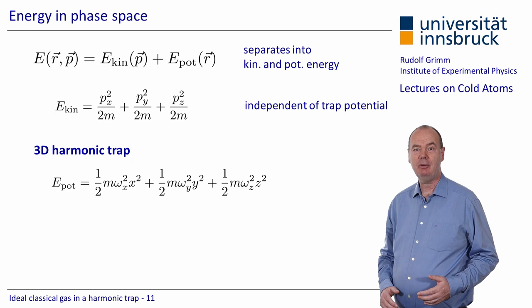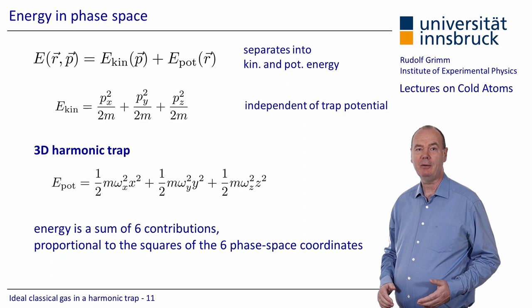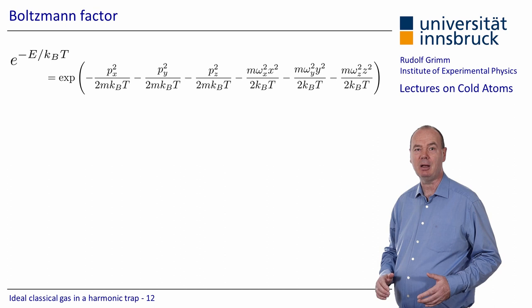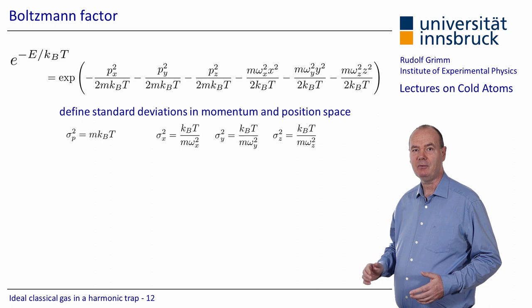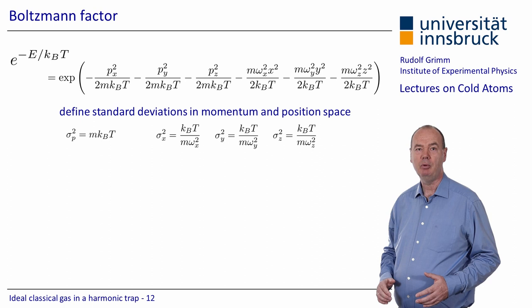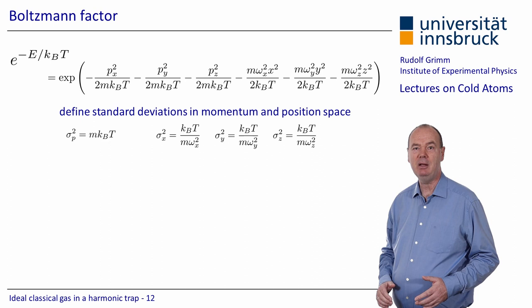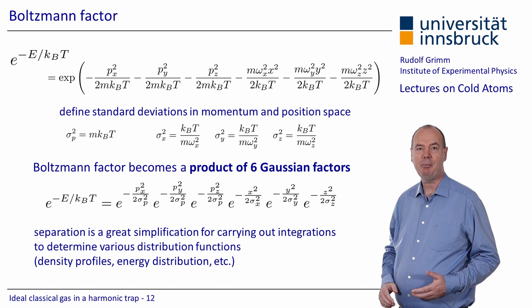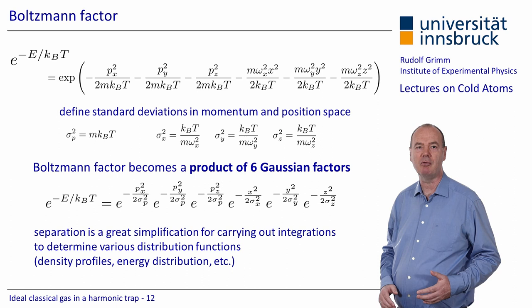We now have everything complete for describing the energy in the 6D phase space of a 3D harmonic trapping potential. The energy is a sum of 6 contributions proportional to the squares of the 6 phase space coordinates. Considering the Boltzmann factor with all its contributions from kinetic and potential energy, we define standard deviations in momentum and position space: sigma_p for the momentum spread, which is independent of direction, and sigma_x, sigma_y, sigma_z for the spreads in the different directions. The Boltzmann factor then becomes a product of 6 Gaussian factors, which greatly simplifies integrations to determine various distribution functions describing density profiles, the energy distribution, and so on.